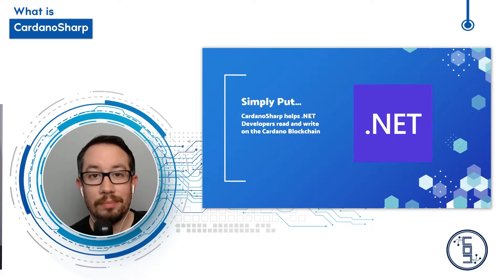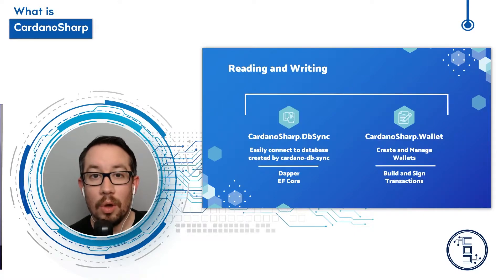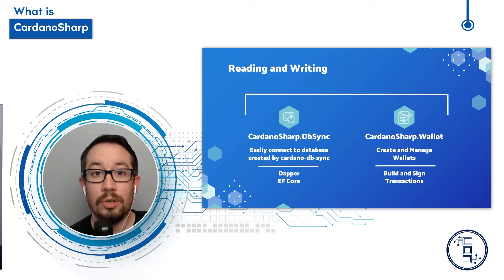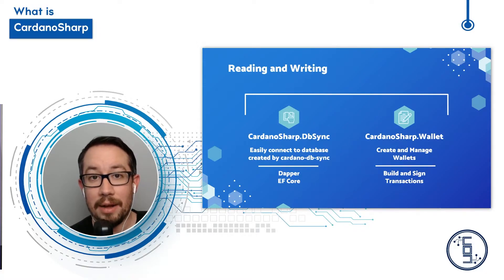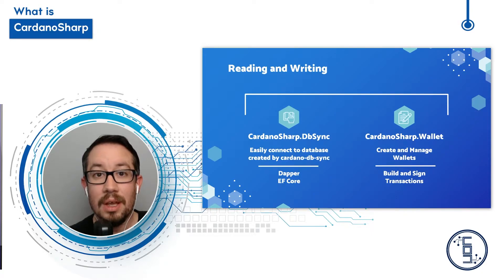First, what is Cardano Sharp? Simply put, it is a .NET library that allows developers to read and write on the Cardano blockchain. We can accomplish this with two pieces of the library. First is the Cardano Sharp DBSync — developers can use either DAPR or EF Core to quickly connect to a database generated by the Cardano DBSync binary. Second is the Cardano Sharp Wallet, which will allow developers to create and manage wallets, build and sign transactions, essentially building a light wallet.